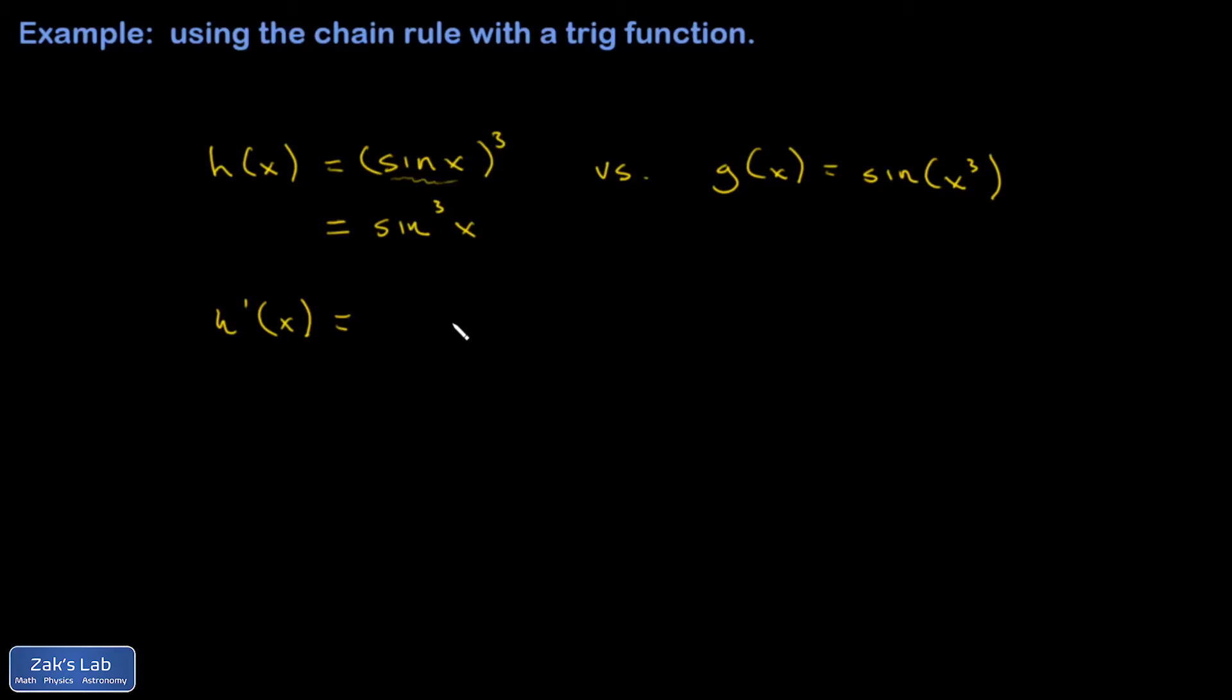So I'm looking at it sort of like a y cubed and differentiating with respect to y. Well, that's just 3y squared or 3 sine squared x. And then the chain rule says I have to tack on the derivative of the interior with respect to x, which is cosine x. So there's h prime.